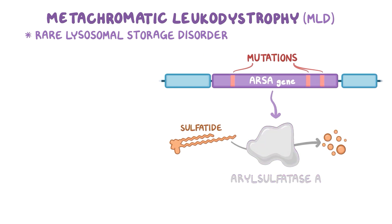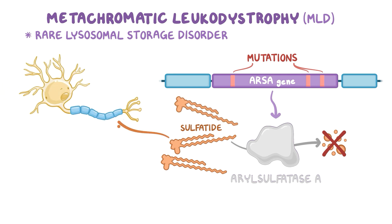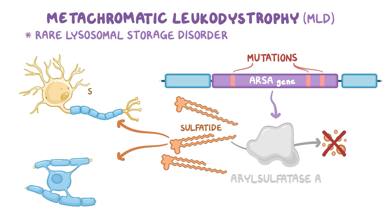Without this enzyme, sulfatide accumulates in neurons and myelin-producing cells, like Schwann cells and oligodendrocytes, resulting in their degeneration.